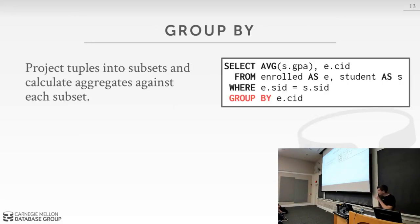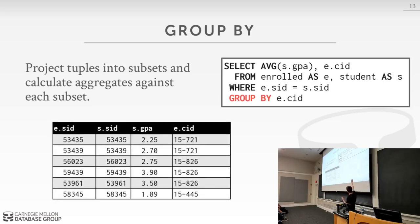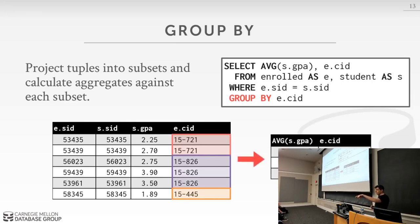You might want to filter your aggregation results — for example, only show courses where the average GPA is greater than 3.9. You might think you can put the aggregation in the WHERE clause, but this doesn't work. The WHERE clause filters tuples as they go in, before aggregations are computed. You can't use an aggregation to filter tuples because you haven't computed the aggregation yet at that stage.